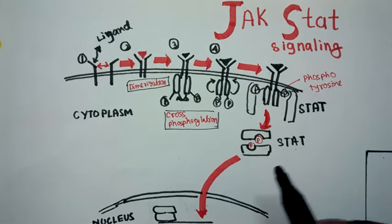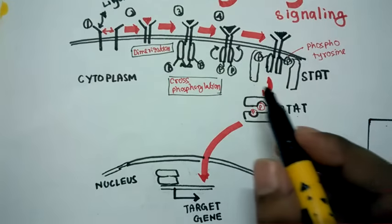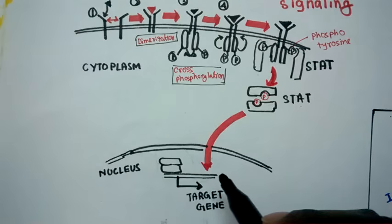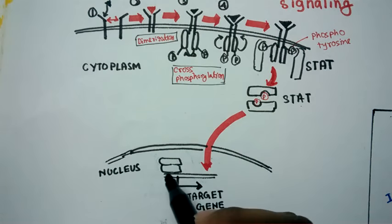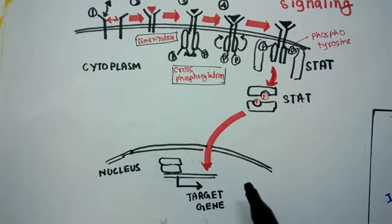The dimerized STAT can migrate to the nucleus. As you can see, this dimerized STAT is getting inside the nucleus. Inside the nucleus, there is a particular STAT binding region where STAT can bind and transcribe its target gene.